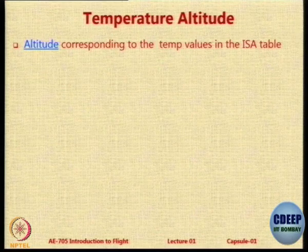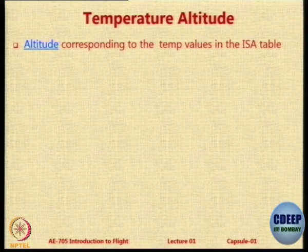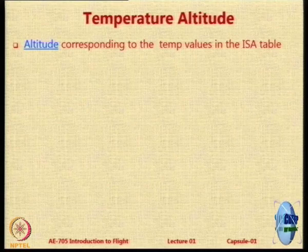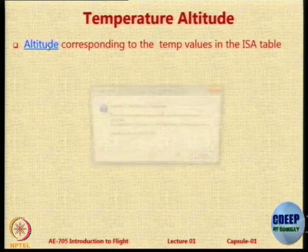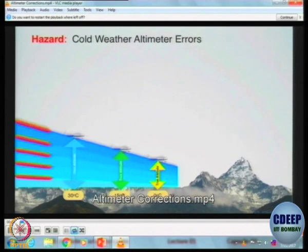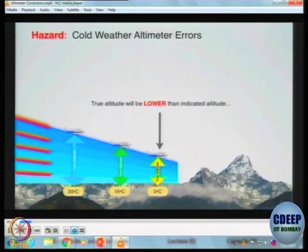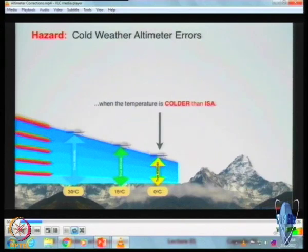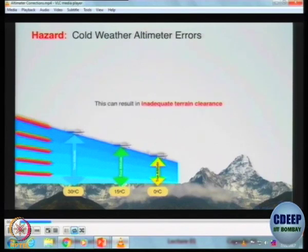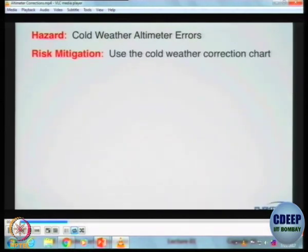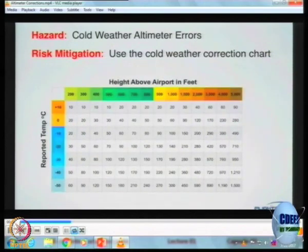Now look at cold weather. If you are flying in cold weather, the true altitude may be lower than what is indicated. You may get a false feeling that you are at high altitude. If the temperature is colder than ISA, you will think you are at high altitude, but actually you are lower — you may go and hit an obstacle, which is very dangerous. Therefore, pilots have to correct the altimeter readings for non-standard temperature.